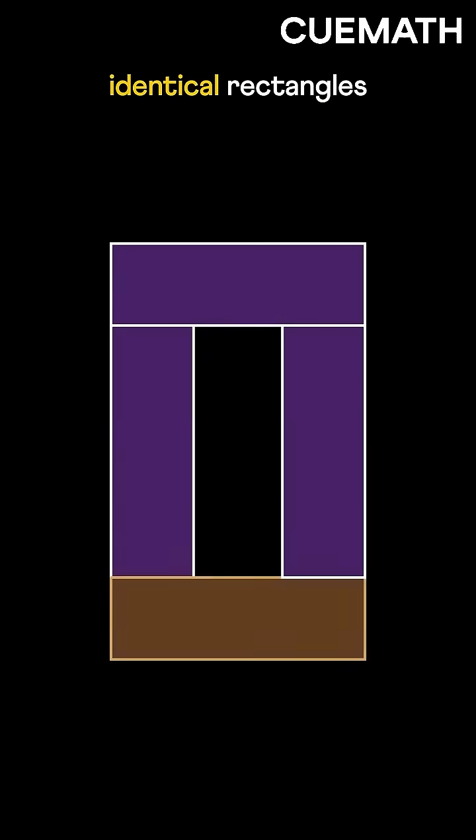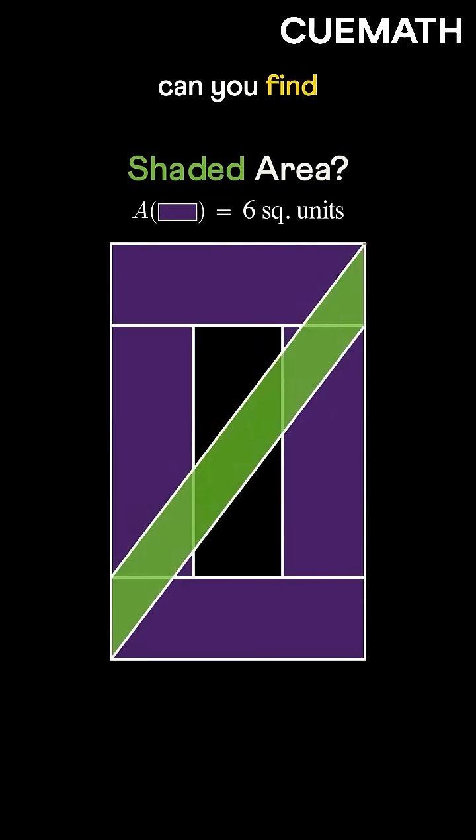Now if each of these four identical rectangles has an area of six square units, can you find the green area?